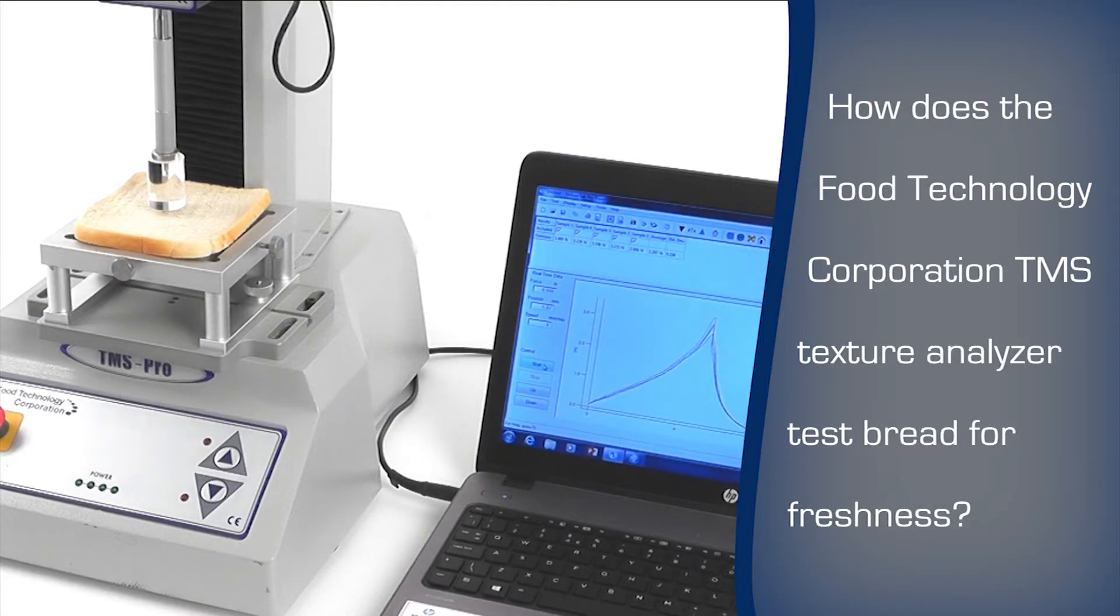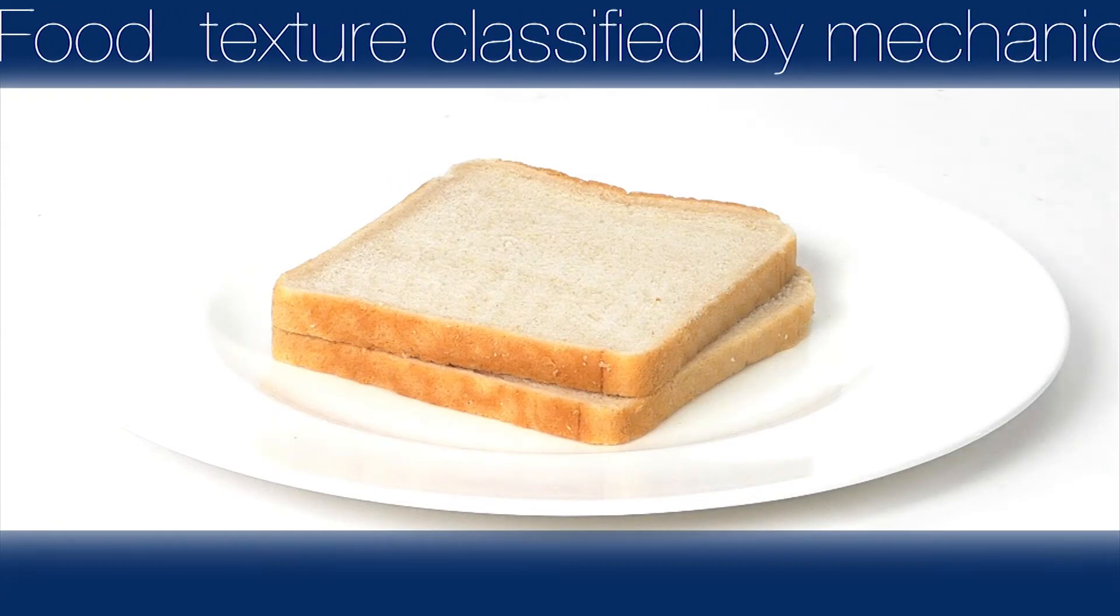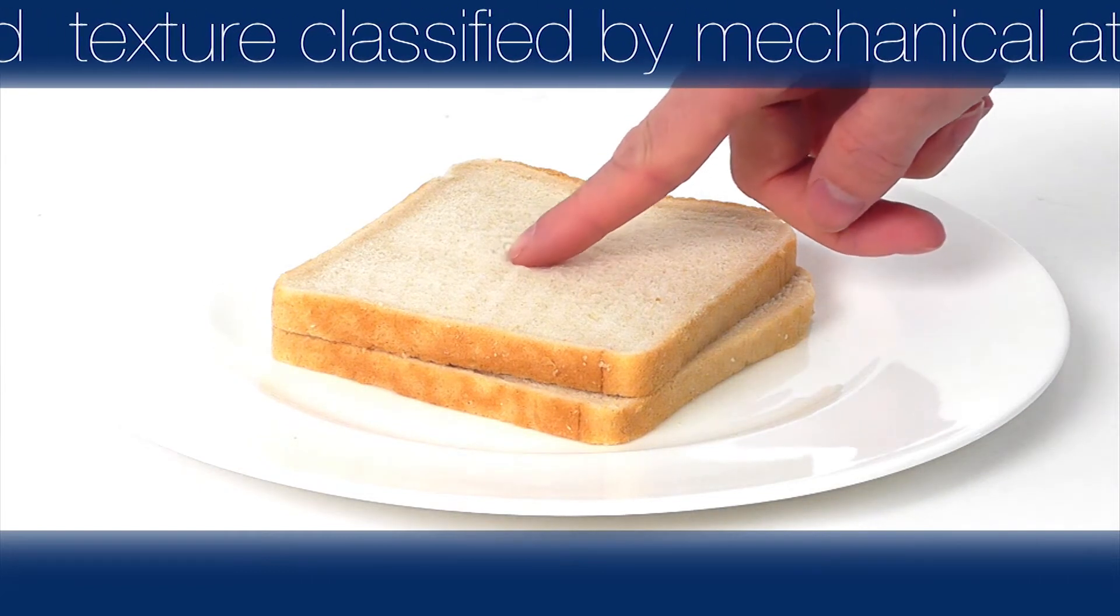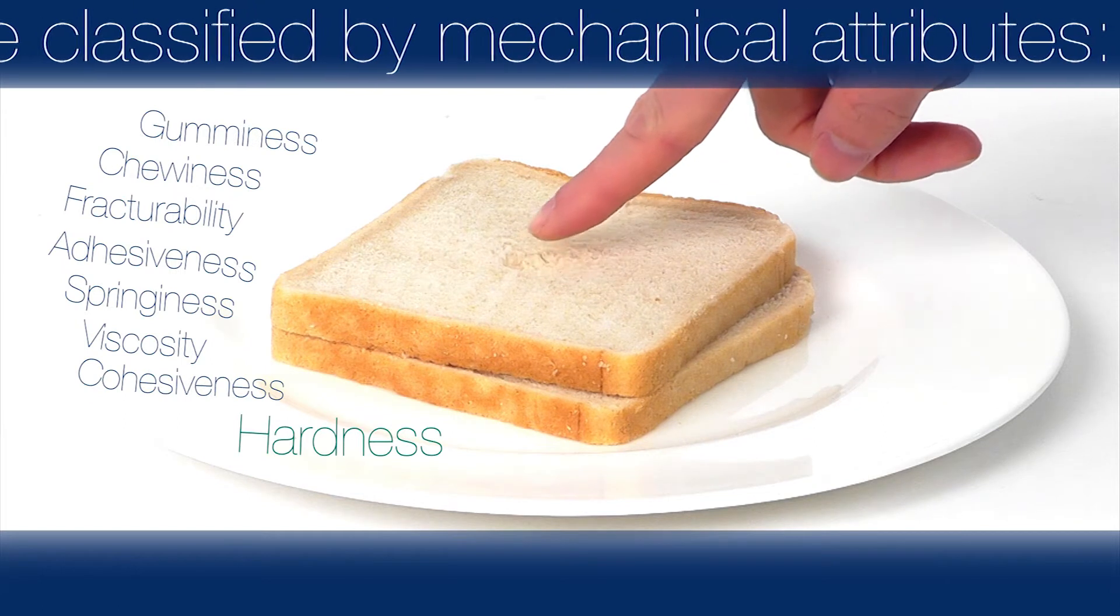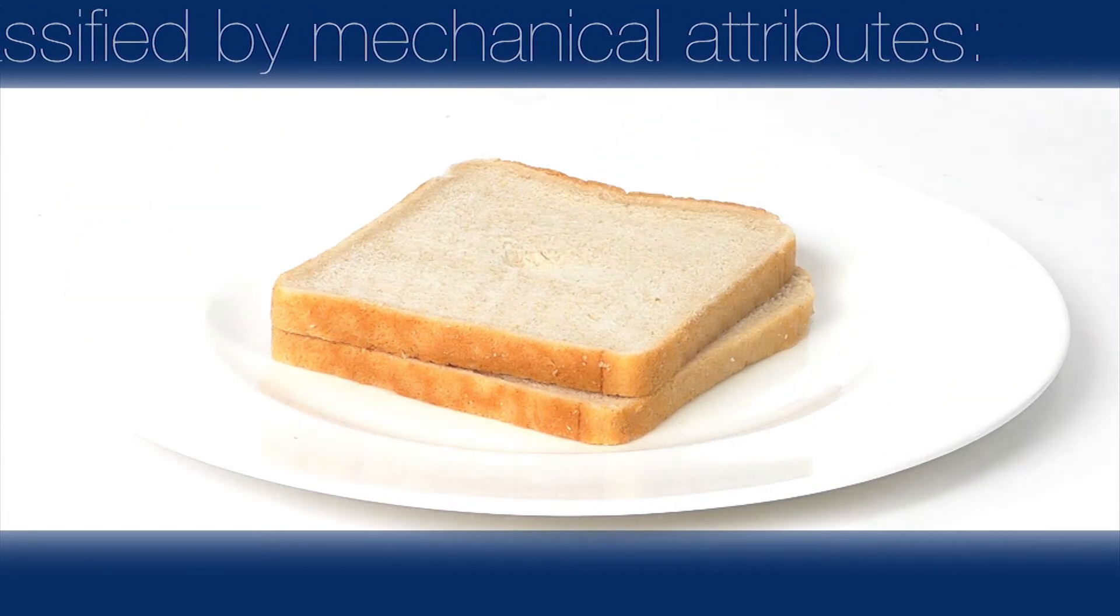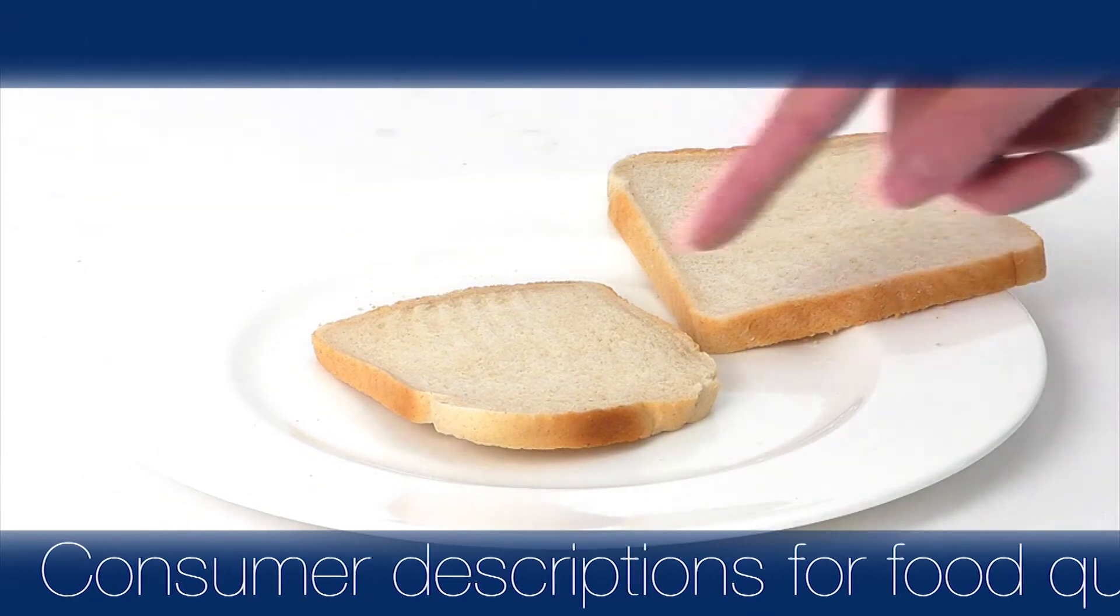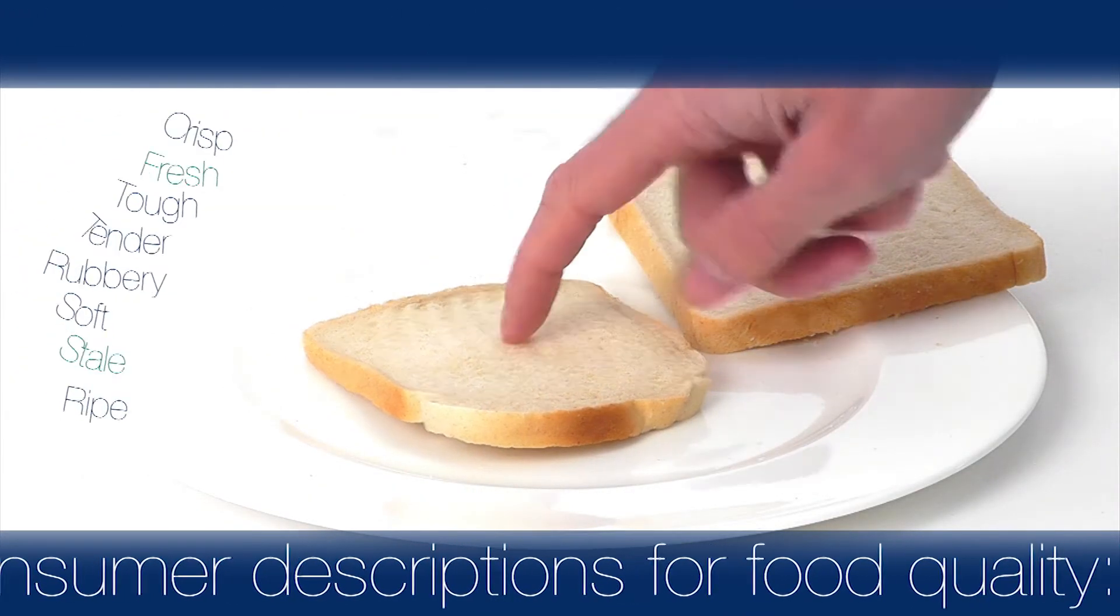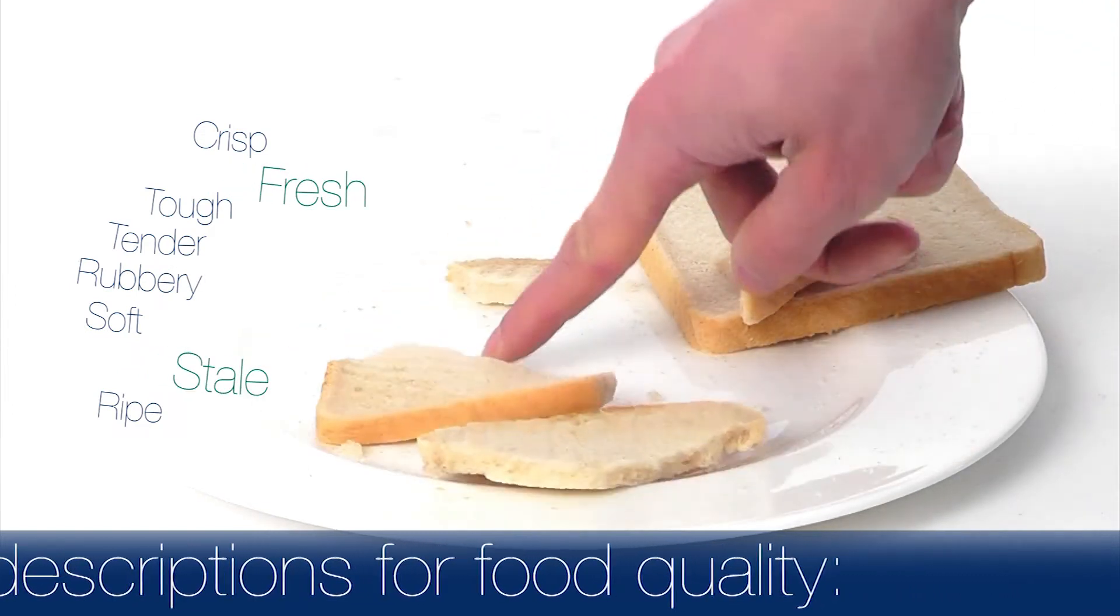The FTC texture analyser can test bread for freshness. Food texture can be scientifically classified by a number of mechanical attributes. A consumer may describe the sensory quality of food with different terms. Consumers judge the quality of food in a sensory manner, evaluating the texture primarily through touch, mouthfeel and in other ways as they interact with the product.